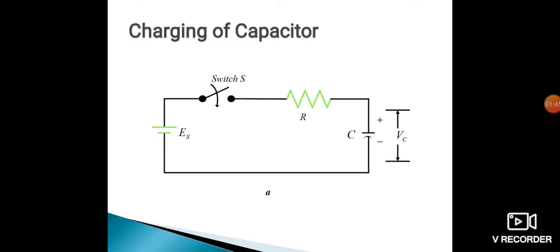This is the charging of capacitor. The circuit is showing the connection of how the capacitor gets charged. ES is the input supply, that is the battery. R is a resistance that is used to limit the charging current, and the switch is used to turn on and turn off the charging current. We have a capacitor at the end, and the voltage across that capacitor will be denoted by VC, voltage across capacitor.